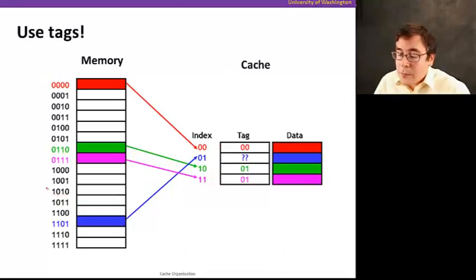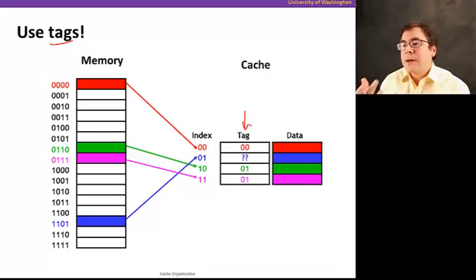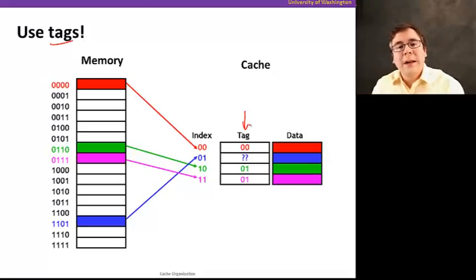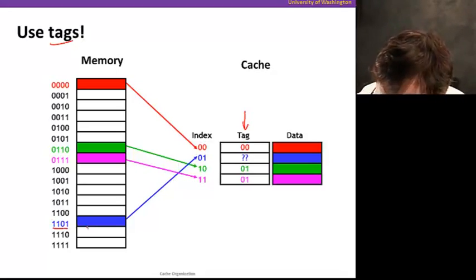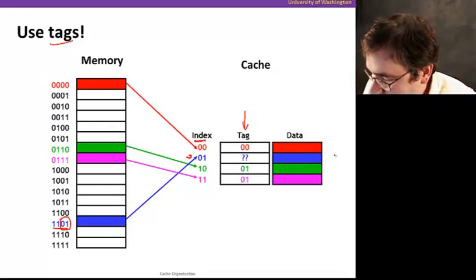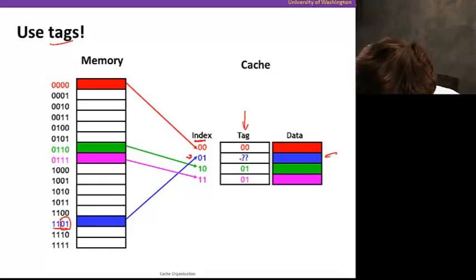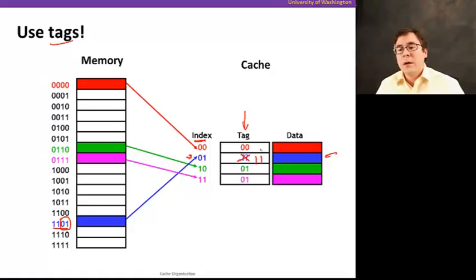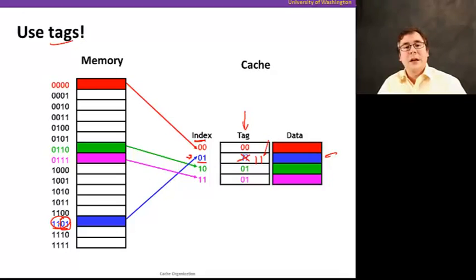How do we solve that? We use something called tags. Tags are another storage element in the cache — one tag per data location — that tells what address is stored there. For example, address 1101, whose lower two bits tell us it goes into a particular cache index, will have tag 11 stored alongside it. Now the tag together with the index lets us tell exactly which address is stored in the cache, eliminating confusion from multiple memory addresses mapping to the same cache position.